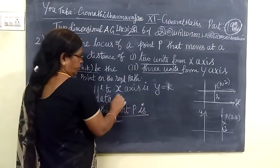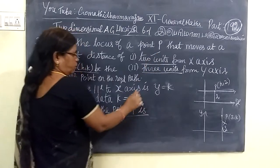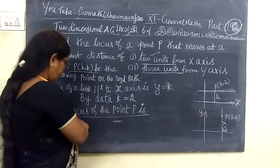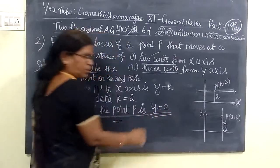By the data, the K value is 2 units. So K equals 2, which gives us the location of the point. The point is Y equal to 2. This is very simple.